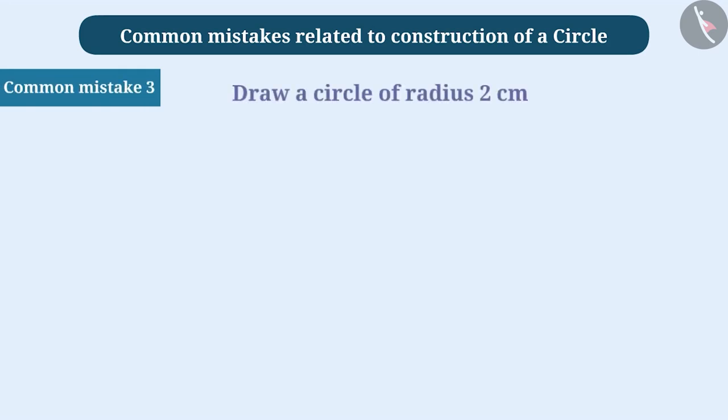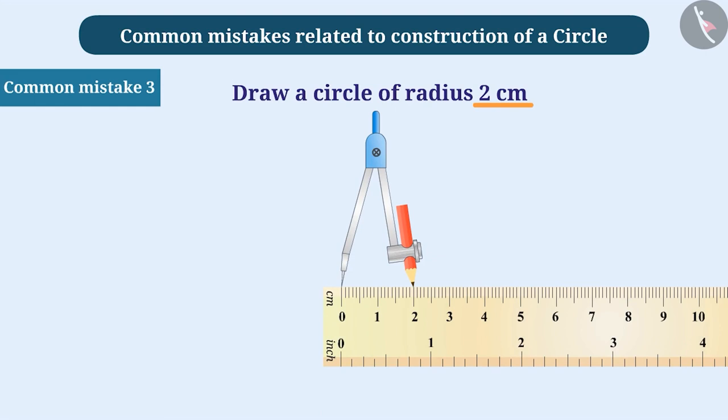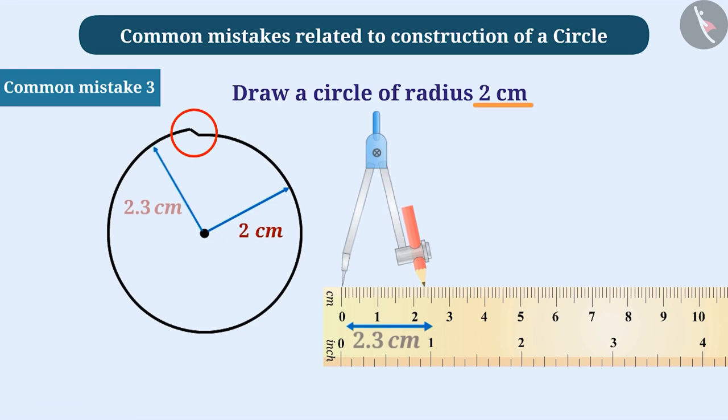Common mistake 3. Some students take the measurements given in the compass while constructing circles, but they fail to maintain the measurement while using the method to construct a circle. Keep in mind that if the distance taken in the compass changes, we will not get the desired circle.